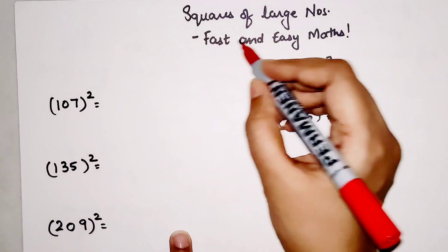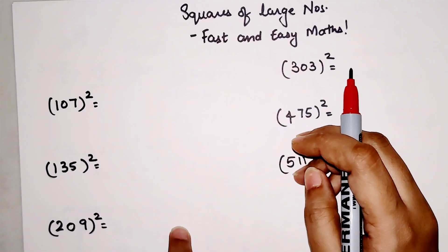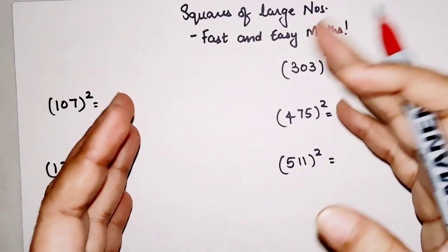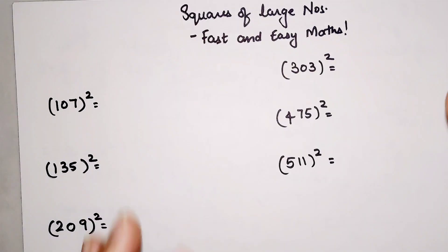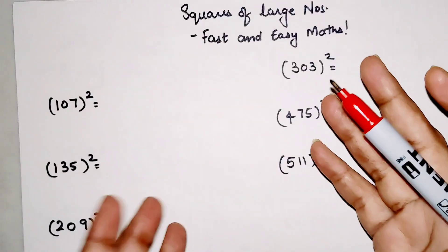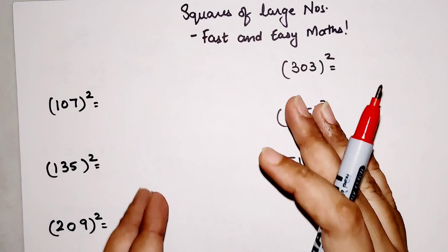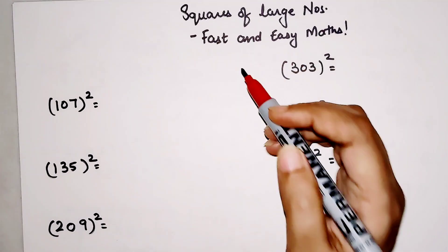Welcome everyone to my channel, Fast and Easy Math, which is dedicated to giving you tips and tricks related to mathematics. I had uploaded a video where I was trying to help you find squares of numbers which were mostly two digits. Most of you commented about what happens when the numbers are large, so I am going to make this video specifically for large numbers.